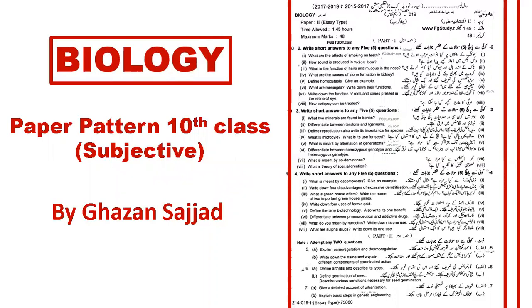There are three parts. The first part is your MCQs — there are 12 MCQs, and there is no choice. In question number two, you give short questions, and each short question is two marks. For two marks, you have six or seven lines.